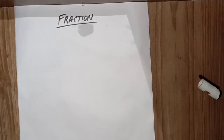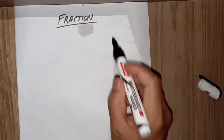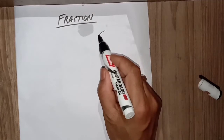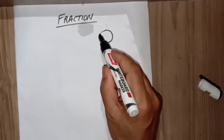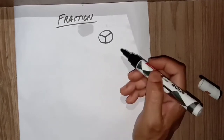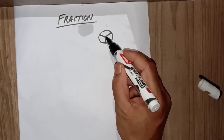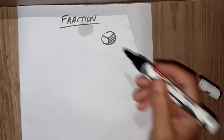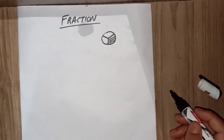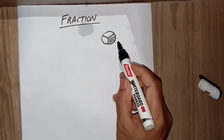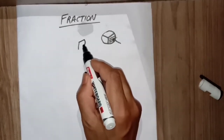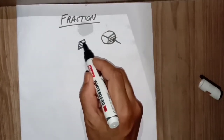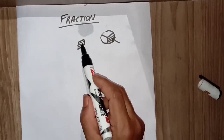Let us understand the definition of fraction with the help of a diagram. Suppose this is a circle. What I did is cut the circle into three parts and I chose this particular part. Now, how am I going to represent only this part?